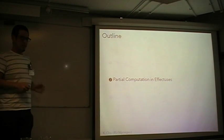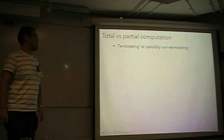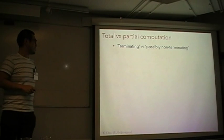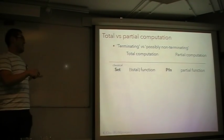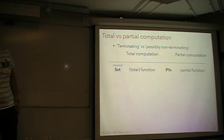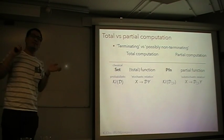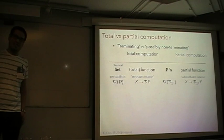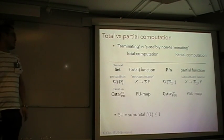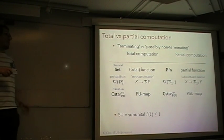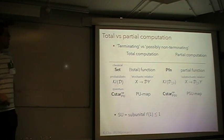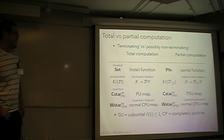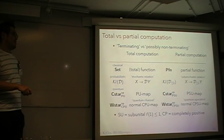Now I'm going to talk about partial computations. What is total versus partial computation? I mean something like terminating versus non-terminating. In the classical case, total computation is modeled by a function, but partial computation is modeled by a partial function. In the probabilistic case, total computation is modeled by a Kleisli map for the distribution monad, but partial computation is a Kleisli map for the subdistribution monad. In the quantum case, total computation is a positive unital map and partial computation is a positive subunital map — these are commonly called quantum channels and quantum operations respectively.